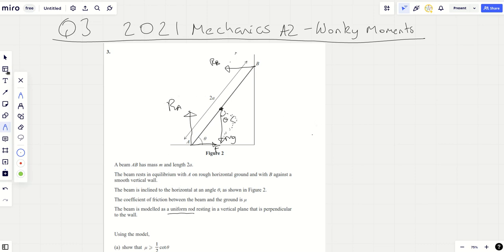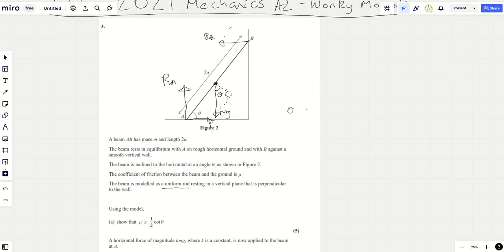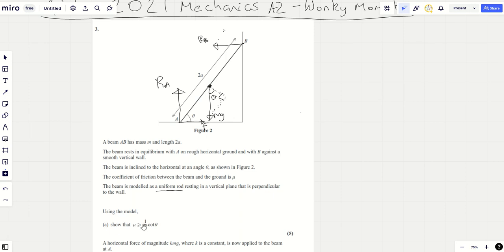You're always going to do that at some point in the question but let's just read the question first. We're going to show that mu is greater than or equal to a half cot theta. Now one thing I do like to point out is that greater than or equal to, I bet it comes from this fact.